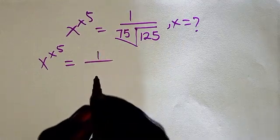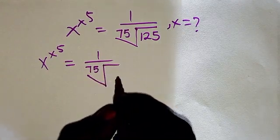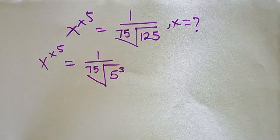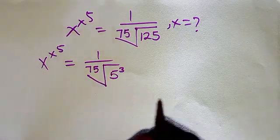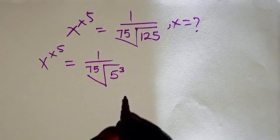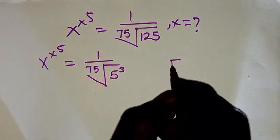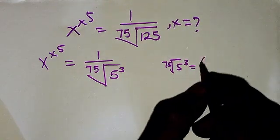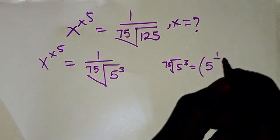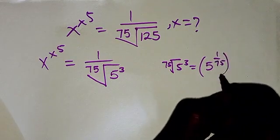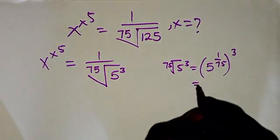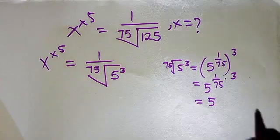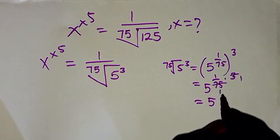I will rewrite the 75th root of 125 by writing 125 as 5 to the power 3, because 5 multiplied by itself 3 times gives 125. So the 75th root of 5³ can be written as 5 to the power 1 over 75, then multiplied by 3, giving us 5 to the power 3 over 75, which simplifies to 5 to the power 1 over 25.